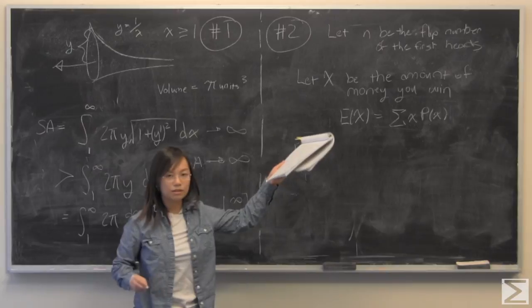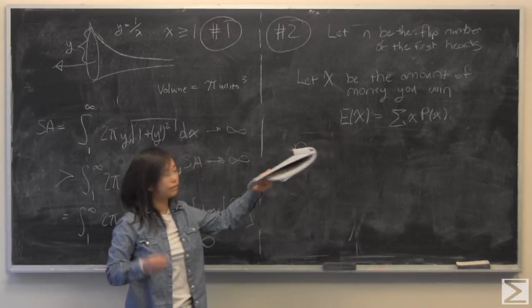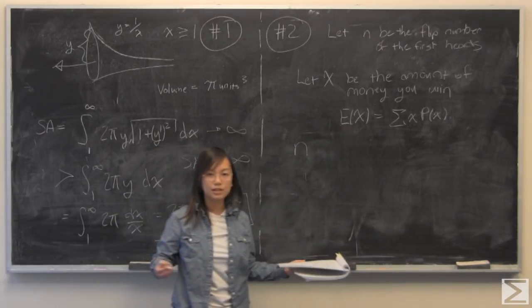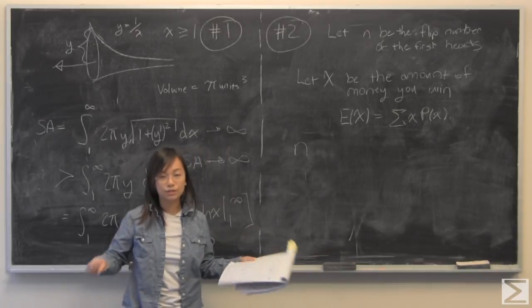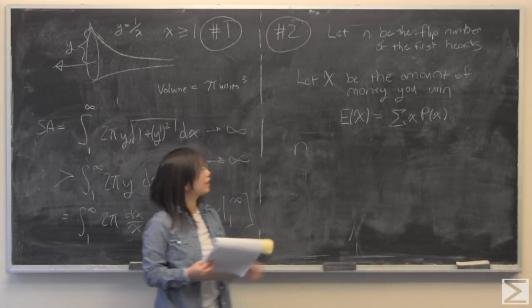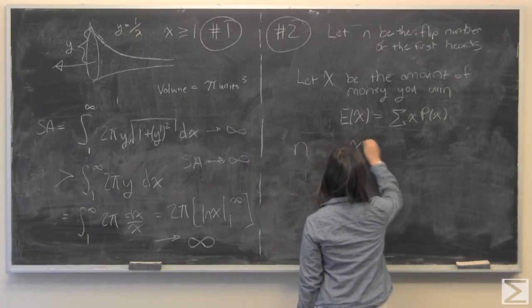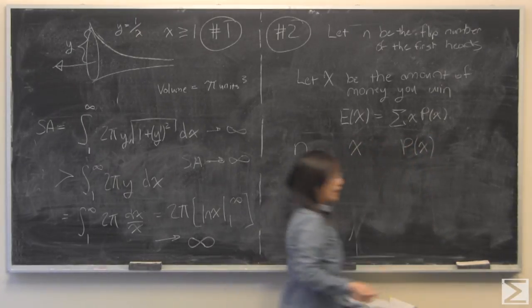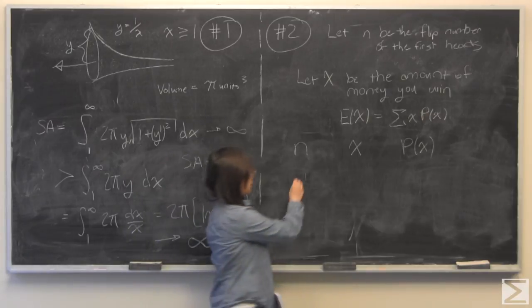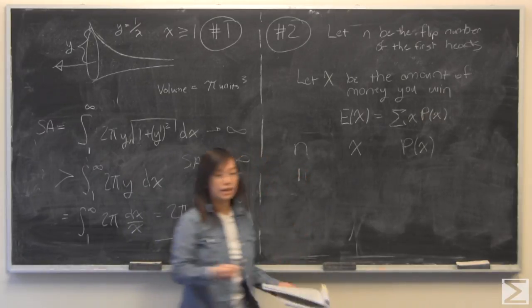I have let n be the number of flips, the flip number of the first head. So if it comes up the first time n is one, it comes up the third time n is three. So I let x equal the amount of money you get and I am also going to take note of the probability of getting x.